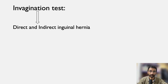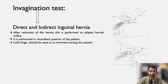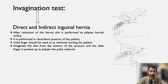The invagination test is done in case of direct and indirect inguinal hernia. After reduction of the hernia, it is performed to palpate the hernial orifice in the recumbent position. The little finger should be used to minimize hurting the patient. Invaginate the skin from the bottom of the scrotum and push the little finger up to palpate the pubic tubercle. The right hand is used for the right side and the left for the left side.